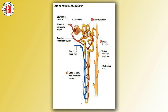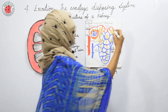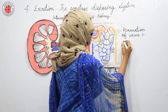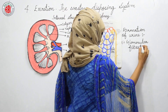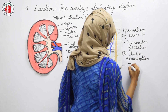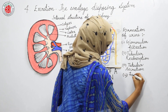The proximal and distal convoluted tubules are connected by a U-shaped tube called the loop of Henle, and the renal tubule is surrounded by blood vessels including the renal artery and renal vein, as well as the afferent and efferent arterioles. The mechanism of formation of urine includes four steps: glomerular filtration, tubular reabsorption, tubular secretion, and formation of concentrated urine.